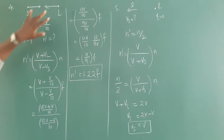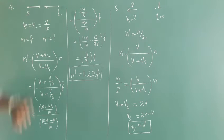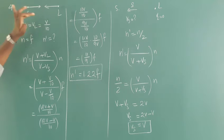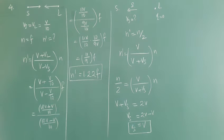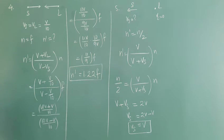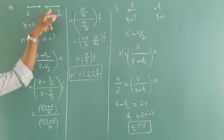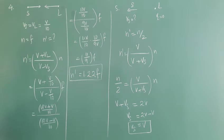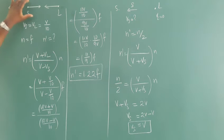Consider source and listener both moving towards each other with velocity V by 10, which is one-tenth of the velocity of sound V. The frequency created by the source is F. What is the frequency heard by the listener? So N dash is equal to what? Since source and listener move towards each other, we use the standard Doppler formula — this is case one.